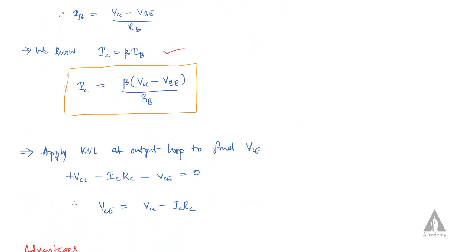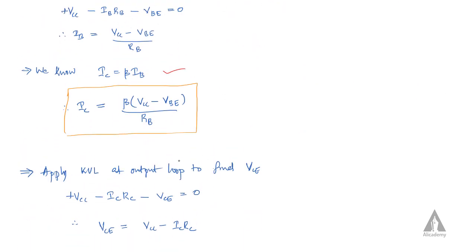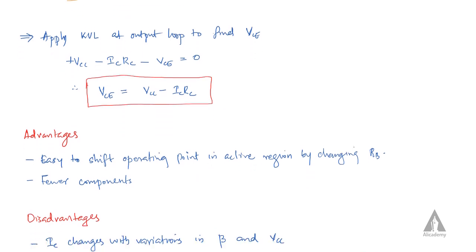When we apply KVL at the output loop to find VCE, we get the equation: VCC minus ICRC minus VCE equal to zero. Rearranging this equation, we get the value of VCE: VCE equals VCC minus ICRC.